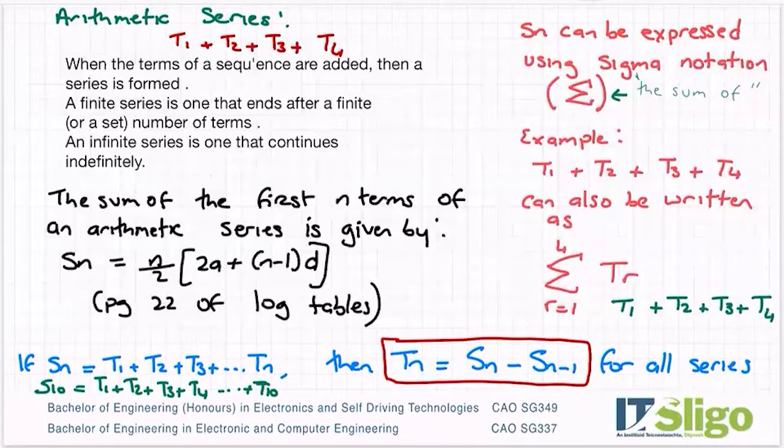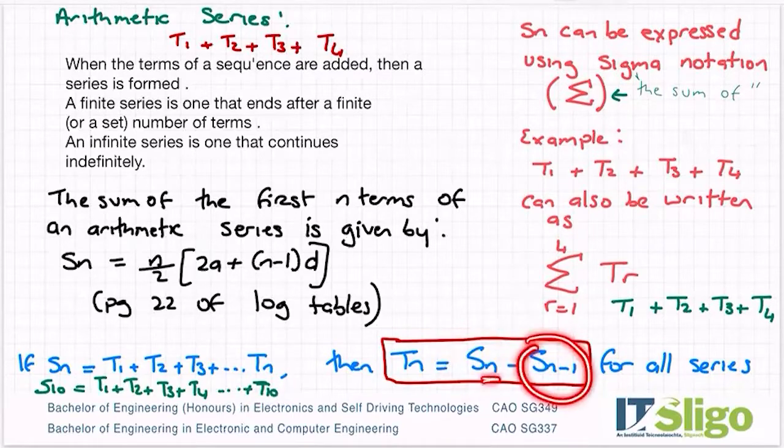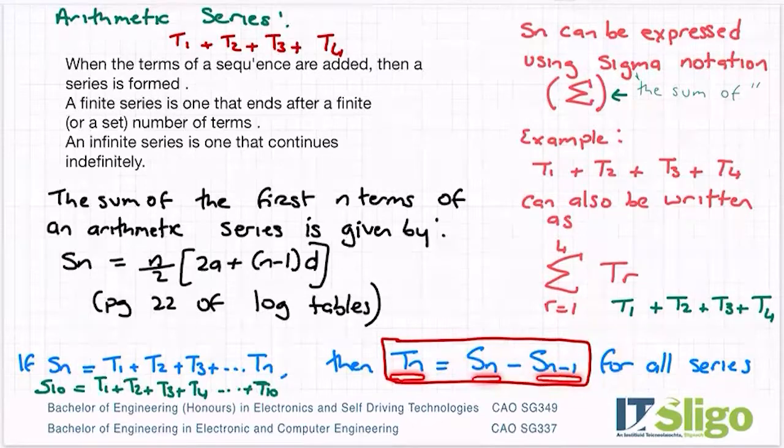And you do that using the following formula and TN is equal to SN minus SN minus one. So again, what does that mean? Well, if I sum up the first 10 terms, so I get S10, and then I sum up the first nine terms, because if N is 10, then isn't N minus one going to be nine? So if I sum up the first 10 terms and then I sum up the first nine terms and I subtract one from the other, then I'm going to be left with the 10th term TN.